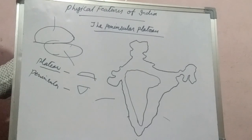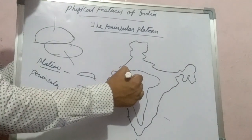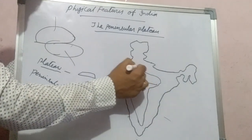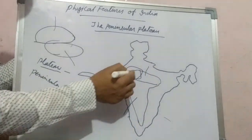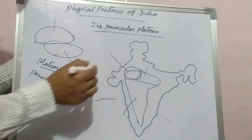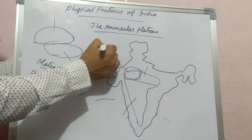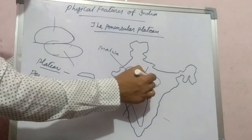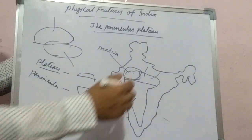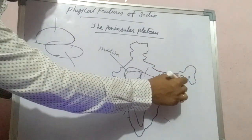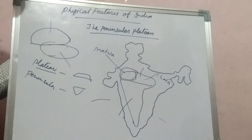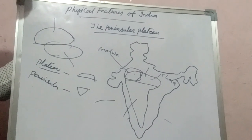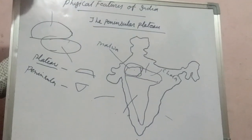This is known as Peninsular Plateau. It has two major divisions. One is known as Central Plateau and the second is known as Deccan Plateau. The Central Plateau has two plateaus: one is called the Malwa Plateau, and the second is called the Chhota Nagpur Plateau. The Peninsular Plateau is a table composed of old crystalline, igneous, and metamorphic rocks.